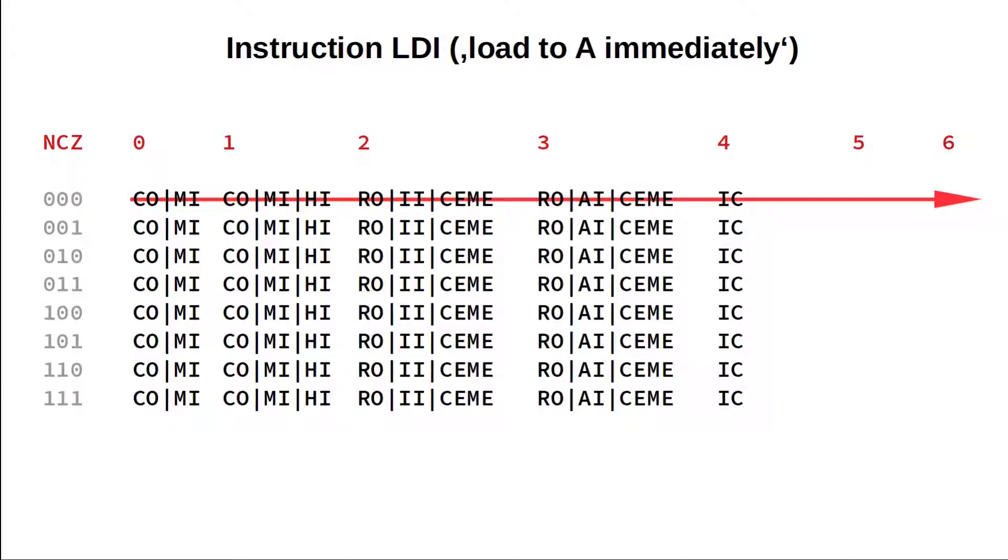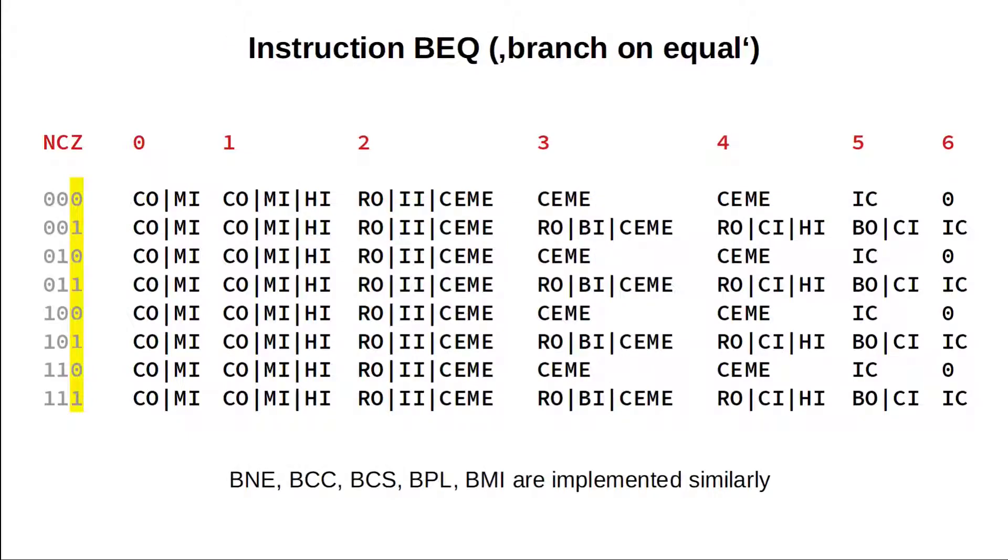Let us now consider a branching instruction, like BEQ for branch-on-equal, which really means branch-on-zero flag Z equals one. In order to achieve this behavior, we need to distinguish the Z equals zero and the Z equals one case in the microcode of this instruction.